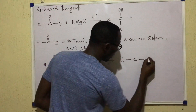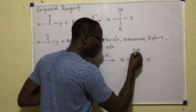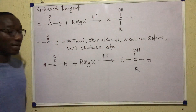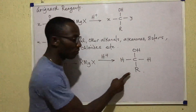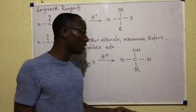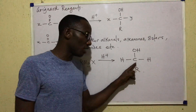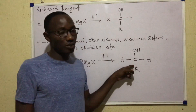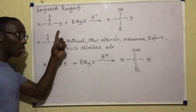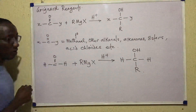Applying those three steps to methanal: the carbon has H and H, the double bond becomes single, O becomes OH, and R from the Grignard reagent is attached below the carbon. R could be methyl, ethyl, propyl, butyl, or any other alkyl group. Regardless of the group, this final product is a primary alcohol, because only one bond from the carbon bearing OH leads to another carbon.